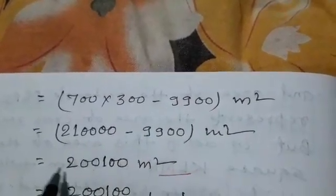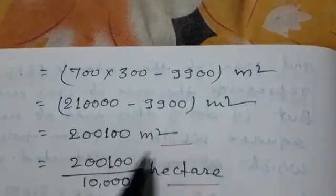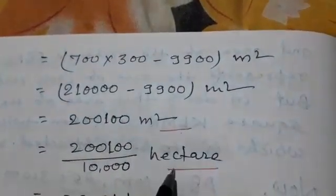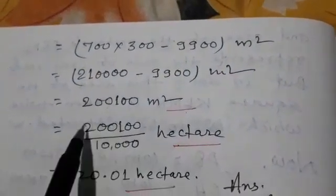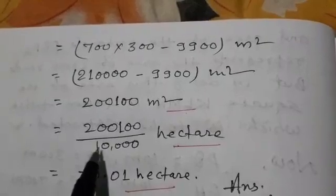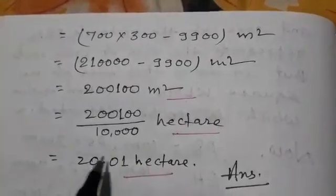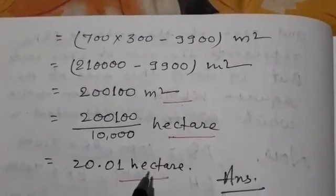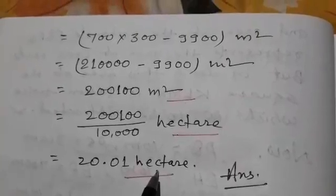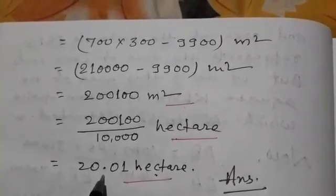After solution, we find this number and we convert it into hectare. So we divide the meter square by 10,000 to convert it into hectare. After solving it, we find 20.01 hectare is the area of park excluding roads. This is the answer to this question. Thank you.